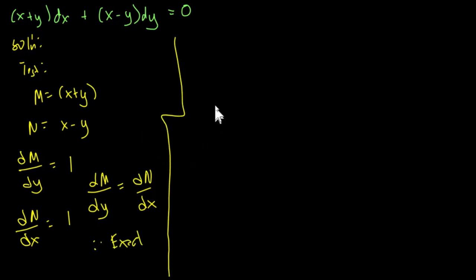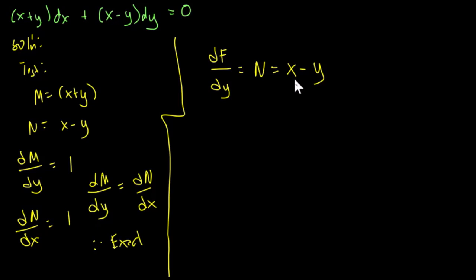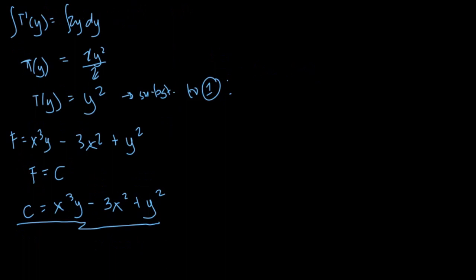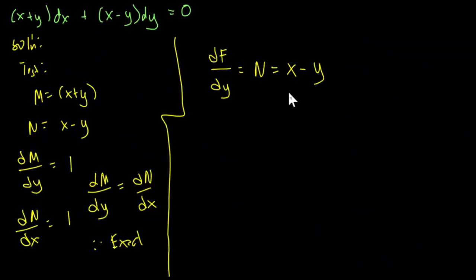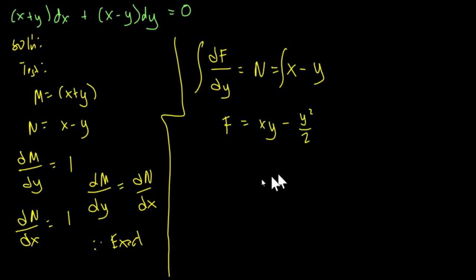Next we choose N. So the partial derivative of f in terms of y equals N = x − y. We integrate this in terms of y. We end up with f = xy − y²/2 + t(x). This will be our equation 1.